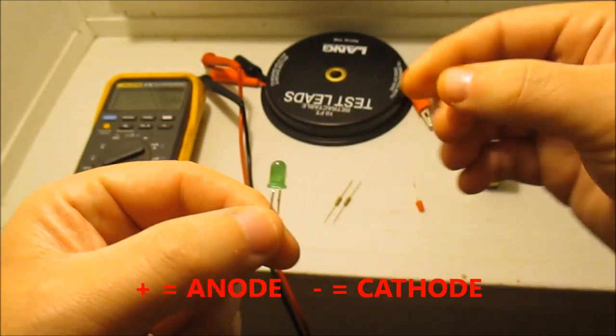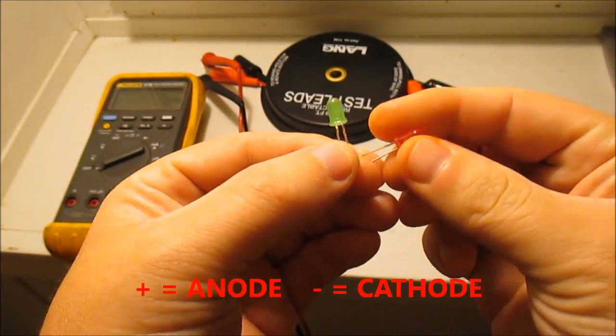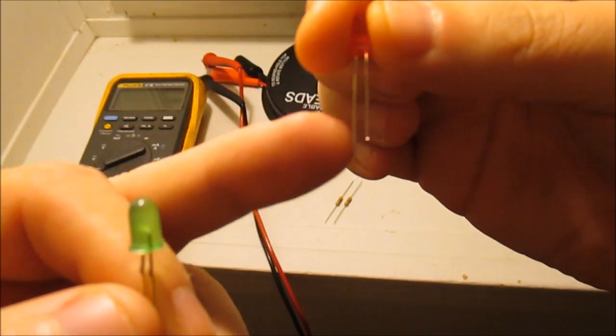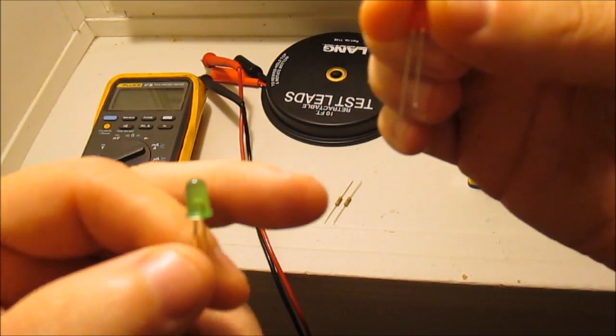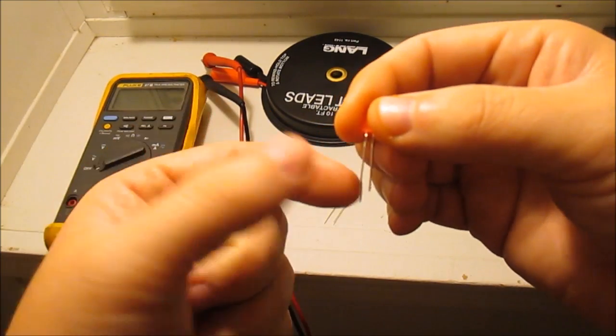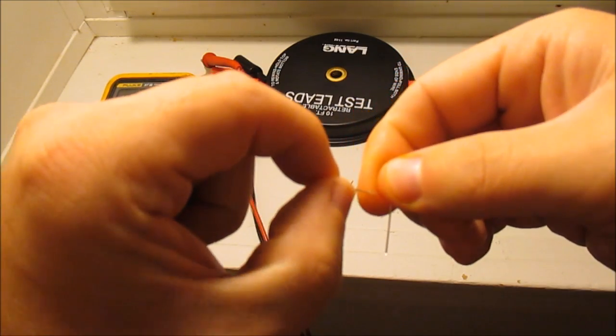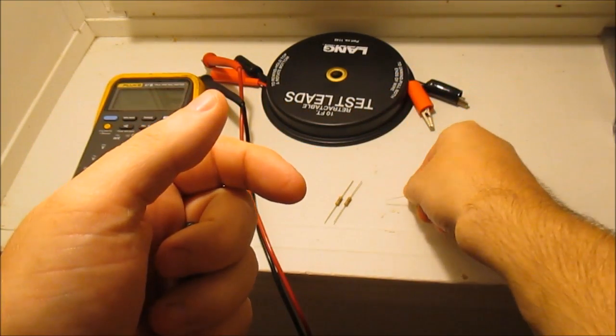Anytime I've ever tested it's always been the case. Here's another one - you can see the long one's positive. Usually what I do is when I first get it, I'll take my long lead, which should be the positive, and I'll just bend this out a little bit like that.